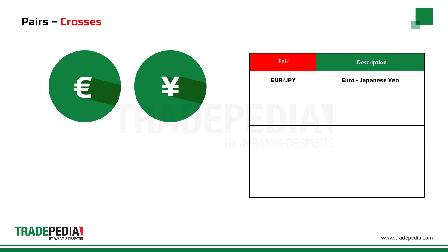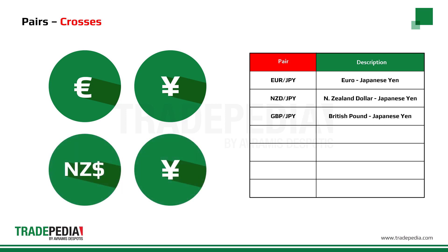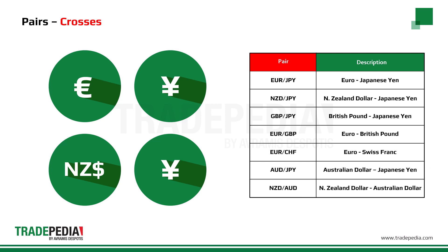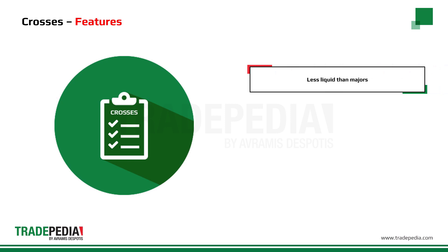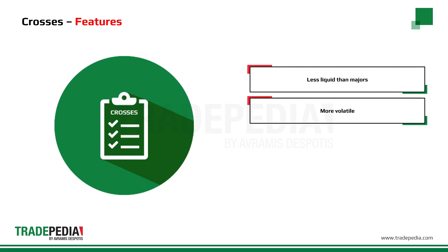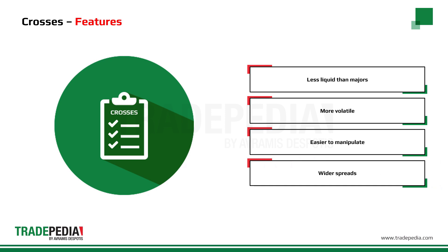Other than the euro-Japanese yen, the most actively traded cross pairs are New Zealand dollar against the Japanese yen, British pound against the Japanese yen, euro against the British pound, euro against the Swiss franc, Australian dollar against the Japanese yen, and New Zealand dollar against the Australian dollar. Crosses are considered slightly riskier than major pairs. They are less liquid, more volatile compared to the majors, slightly easier to manipulate due to reduced volume, and characterized by low to medium transaction costs.